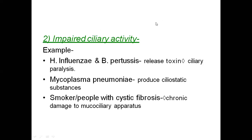Impaired ciliary activity: Haemophilus influenzae and Bordetella pertussis release toxins causing ciliary paralysis. Mycoplasma pneumoniae produces a ciliostatic substance, making the ciliary cells static. This allows microorganisms to invade more easily, prolonging infection duration.